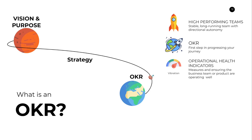If the rocket is heading off course while taking off, we need to readjust. So sometimes a health metric can become an OKR because you need to course-correct something. Generally that won't happen in cycle, but sometimes it does. That's the fundamental idea behind what OKR is, how it differs from KPIs, and how it helps you make progress on your strategy.